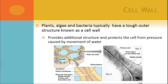Cell wall — animal cells don't have these. Plants, algae, and bacteria do. They have this tough outer structure that provides additional support and protects the cell from pressures, especially if it's a cell that will move. In plants, it's what gives that rigid structure. Plant cells also have a slightly different process of mitosis — cellular reproduction — because of the cell wall, and we will talk about that a little bit.